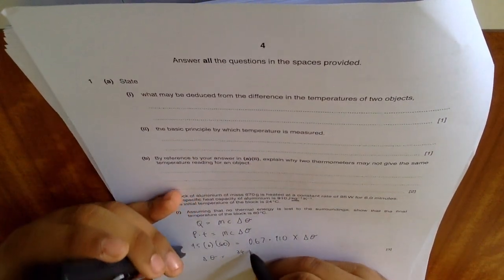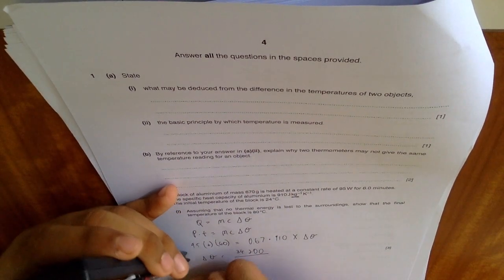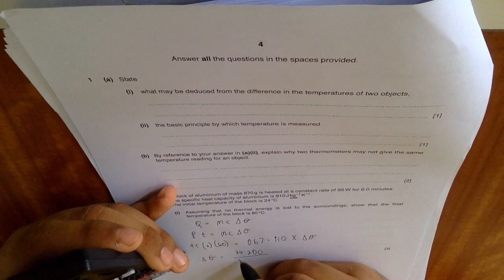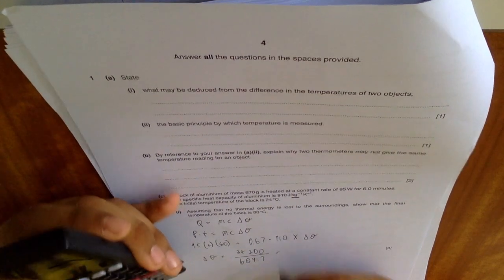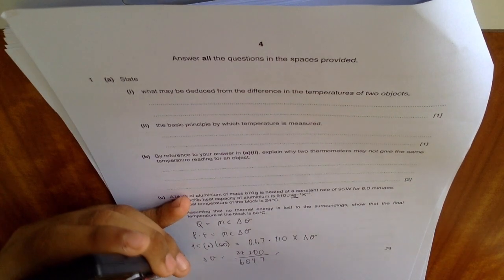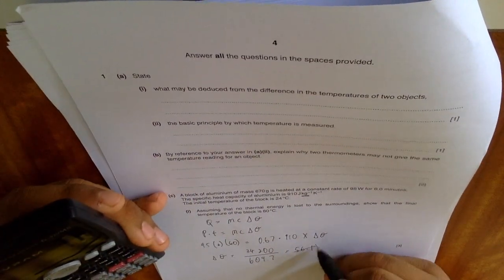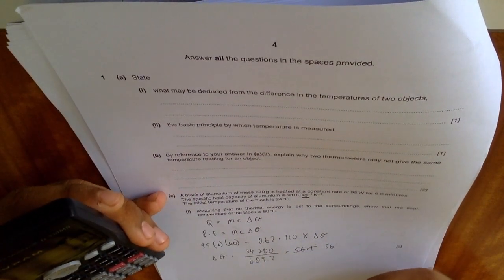This is 34,200. 34,200 and 0.67 into 910 is 609.7. The delta theta is 56.1 degrees, or you can just put 56 degrees to two significant figures.